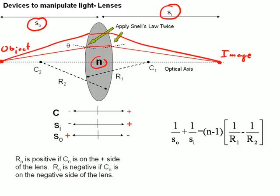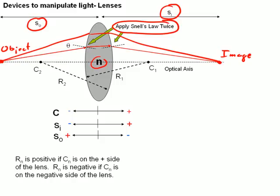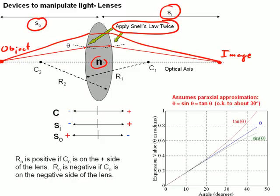However, in deriving this equation, and again there's a second mini-lecture you can watch that does derive this, in deriving this equation I've had to apply Snell's law twice to this surface, and I've made the following approximation, which is called the paraxial approximation. That approximation is that theta is equal to sine of theta is equal to tangent of theta.